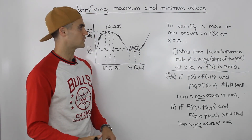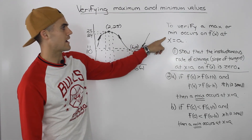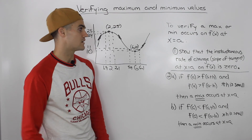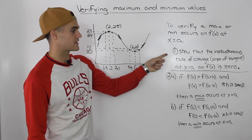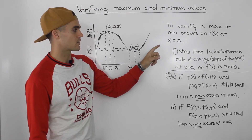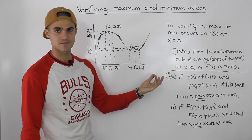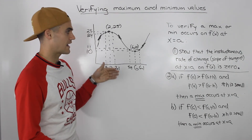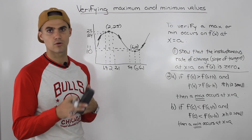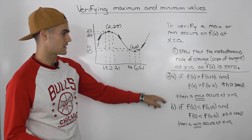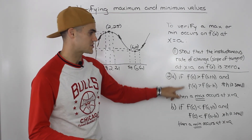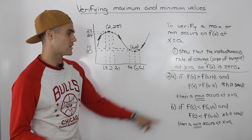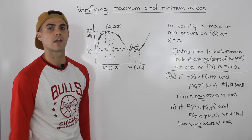So you can always follow these steps whenever you're asked to verify a max or min on a function at an x value of a. First step: show that the instantaneous rate of change, or the slope of the tangent, at that x value of a on the function is zero — so we know a max or a min is occurring, but we don't know which one yet. Then in step two, depending on which scenario happens with the y values of the function very close to that point, we'll know whether it's a max or a min.